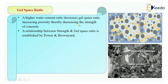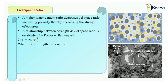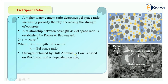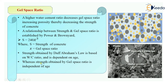Now let's see the relationship between strength and gel space ratio established by Powers and Brownyard. The relation is: S = 240 × x³, where S is the strength of concrete and x is the gel space ratio. Note that the strength obtained by Duff Abrams' law depends on the water-cement ratio and also on the age of concrete, but the strength obtained from the gel space ratio relationship is independent of age.